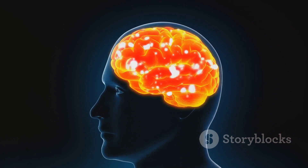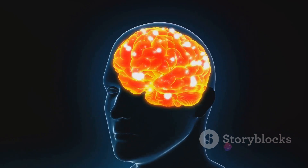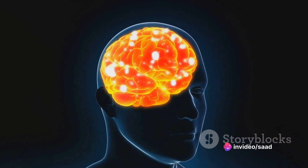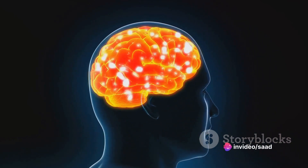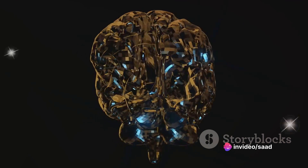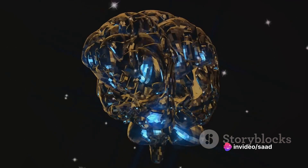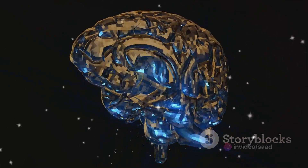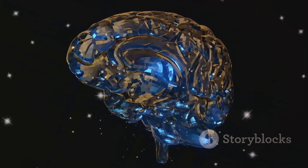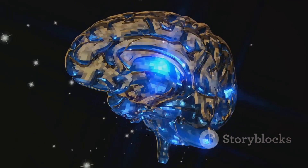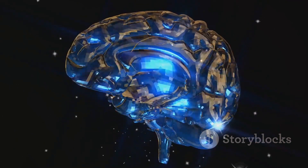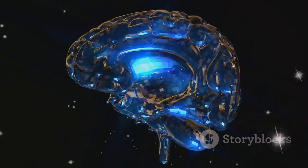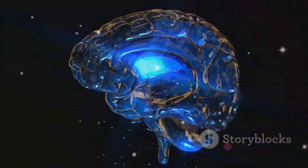The brain, the master choreographer of this sensory symphony, receives these signals. It carefully interprets the information, deciphering the speed and direction of the head's movement. This neurological ballet allows us to maintain our spatial awareness even as we twirl.